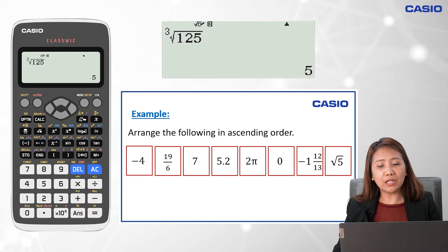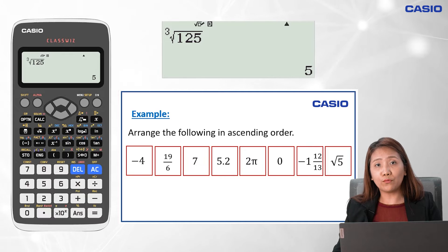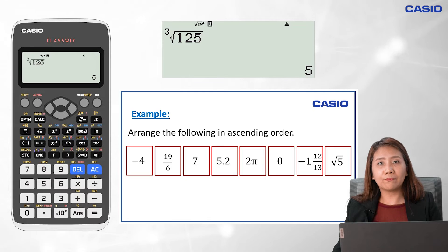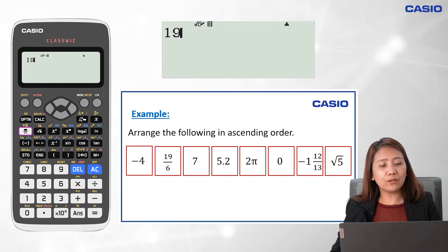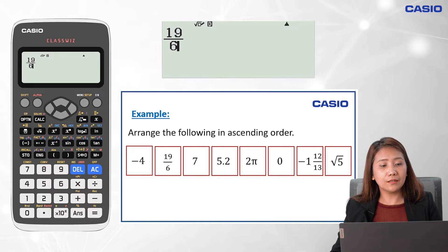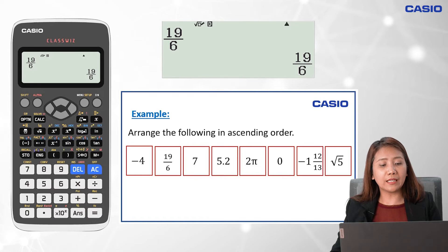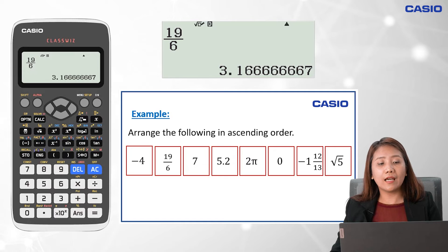This time, we are asked to arrange the following in descending order, and it will be easier if all values are in one form. Therefore, let's write all the numbers in decimal form. First, let's change 19 over 6 to decimal. We key in 19 in the numerator, followed by the fraction key, then 6 in the denominator, press equal sign, change to decimal by clicking SD, and the value is approximately 3.17.